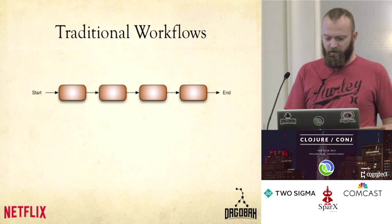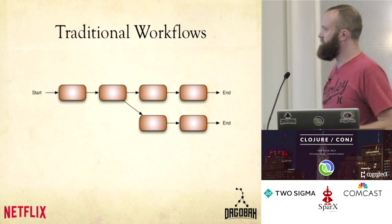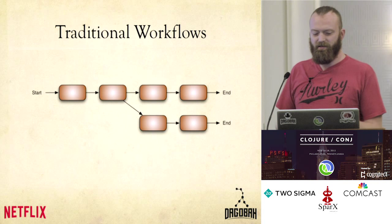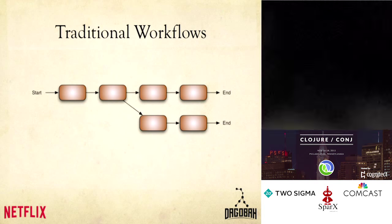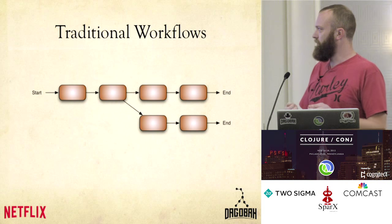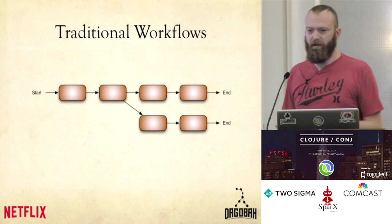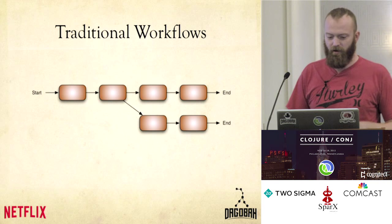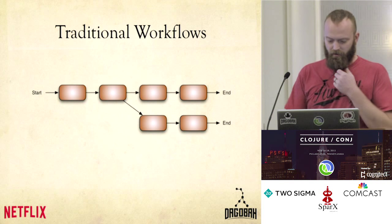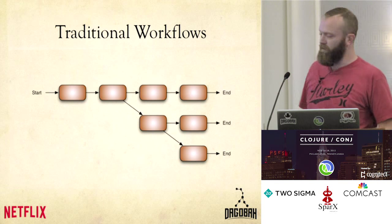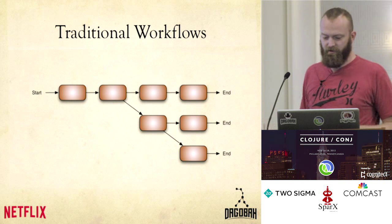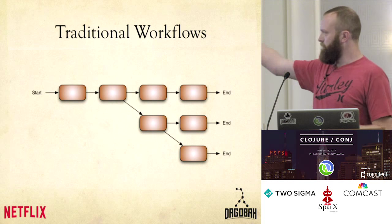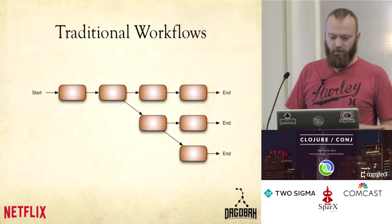Traditional workflows are good at branching out in this direction. You might have something in here that says: I'm going to look at the current state of the world, and based on that I'm going to take this path or that path. You can make decisions and further that branching — so you go out here and now I'm going to make another decision. You start at the same place but might have multiple different outcomes from this workflow.